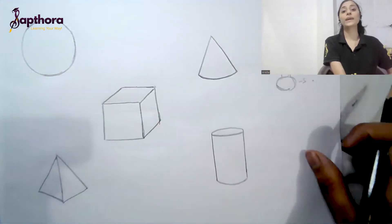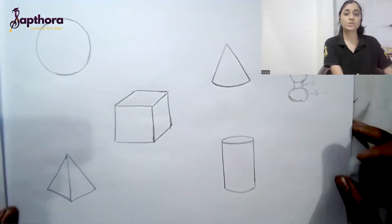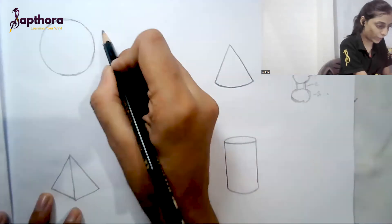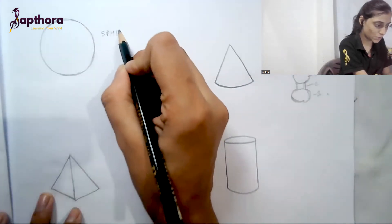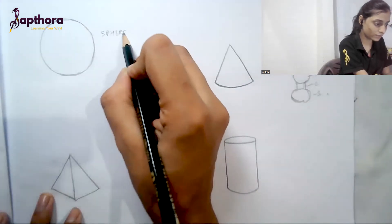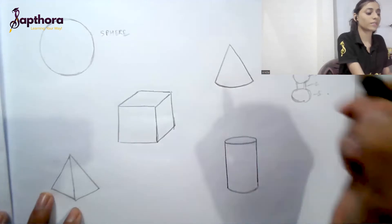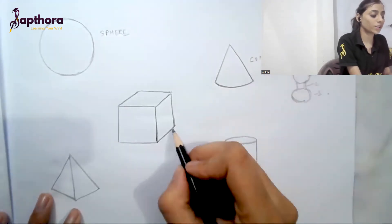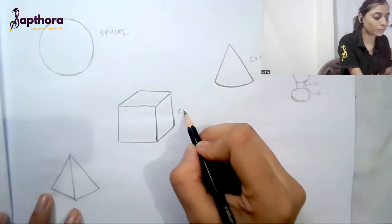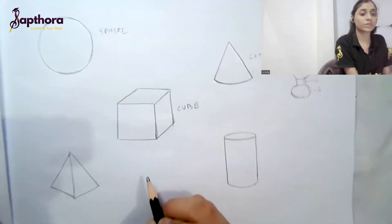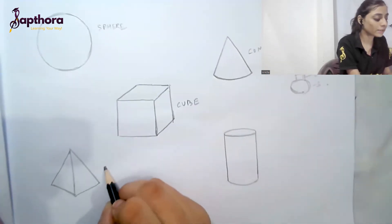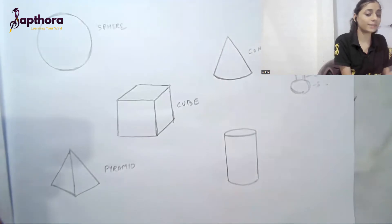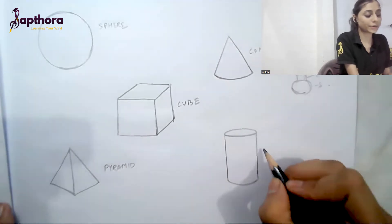Let's start. You need to quickly draw these five shape forms: the sphere, the cone, the cube, the pyramid, and the cylinder.